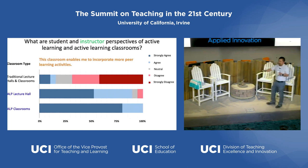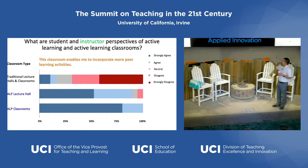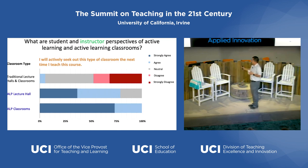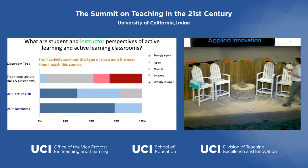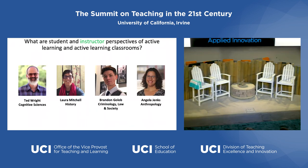On the instructor side, faculty were asked to rate agreement with: 'This classroom enables me to incorporate more peer learning activities.' Responses were pretty negative for traditional lecture halls but much more positive for the Learning Pavilion rooms. Similarly, faculty asked 'I will actively seek out this type of classroom next time I teach' were not happy with traditional rooms but much more positive with the Anteater Learning Pavilion. There's a ton more data being collected, but things are looking positive and mostly as expected.